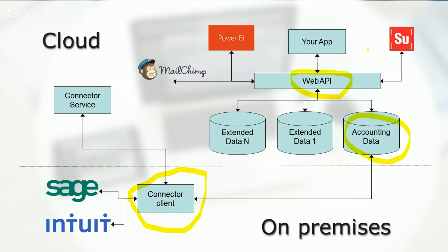Suntico also provides an online CRM account management app — that's our own app, which interfaces to the Sage data through our own web API, the same API that you as a developer would use. Through our own investment, we're also creating other integrations, for example to Microsoft Power BI and to MailChimp. But we're making this API publicly available to you as a developer so that you can integrate your app to the Sage 50 accounting data as well.